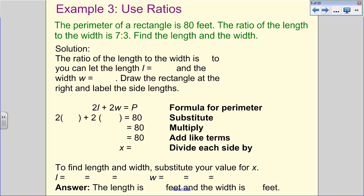Find the length and the width. So the ratio of the length to the width is 7 to 3. And if we look at the diagram in here, we can let the length equal 7X. And we can let the width equal 3X. All right. So now we need to draw the rectangle at the right and label the side. So we need to draw this rectangle.